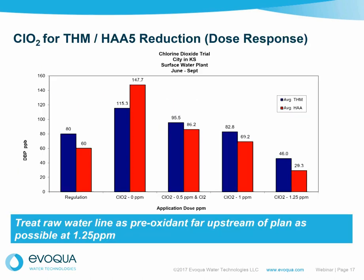This is a case that we piloted in Kansas. On the left-hand side of the graph are the MCLs for THMs and the haloacetic acids. You can see that with no chlorine dioxide, the plant was in breach. As you work toward the right, you see the loads of chlorine dioxide go from 0.5 ppm to 1 ppm to 1.25 ppm. It takes some piloting — it is not straightforward to apply, as the plant chemistry and water chemistry also matter. But it is possible to pre-oxidize and get a non-compliant water source into compliance, bringing the disinfection byproducts under the MCL.